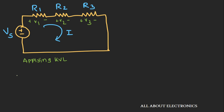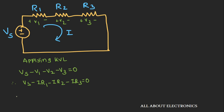Applying KVL, we can write Vs - V1 - V2 - V3 = 0. Now, using Ohm's law, we can write V1 as I×R1, V2 as I×R2, and V3 as I×R3. So we can write Vs = I×(R1 + R2 + R3).